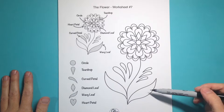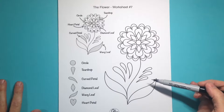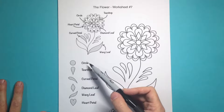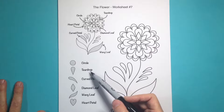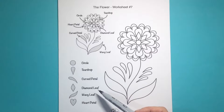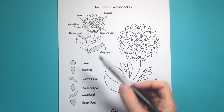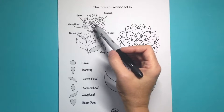Here we have the six shapes that went into this flower design. Over to the left I have the shapes: circle, teardrop, curved petal, diamond leaf, wavy leaf, and the heart petal. Up at the top I show you where each of the shapes are appearing in the flower.